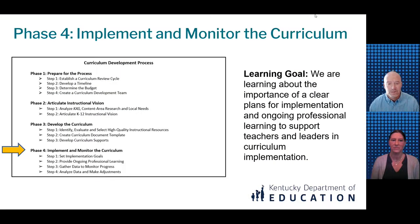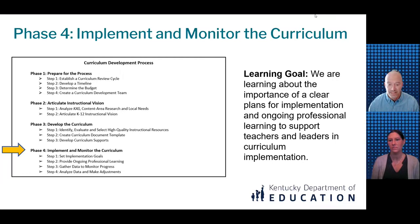Before we move into Phase 4 content, it will be helpful for you to establish a baseline level of understanding. Look briefly at the name of Phase 4, Implement and Monitor the Curriculum, and its four steps. Our learning goal is: we are learning about the importance of clear plans for implementation and ongoing professional learning to support teachers and leaders in curriculum implementation. This information will be helpful when we activate background knowledge about this fourth phase.